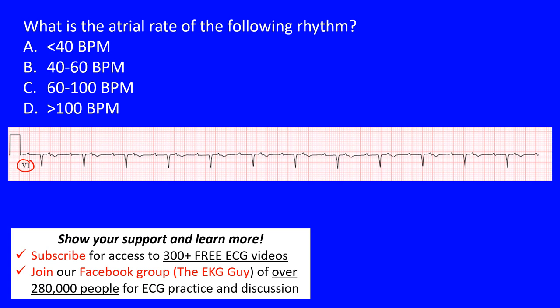One thing to note is that we're looking at the atrial rate, so think of P waves — that's what we use to identify it. When we look at ventricular rate, you can use the QRS complexes, which are commonly used, or the T wave. Remember, the T wave represents ventricular repolarization.